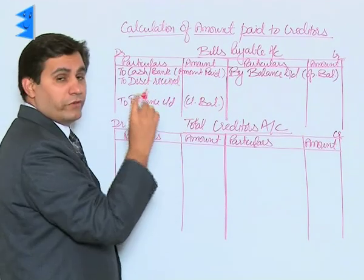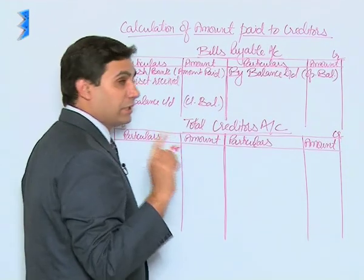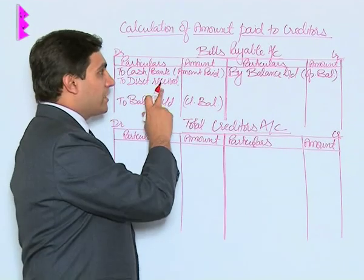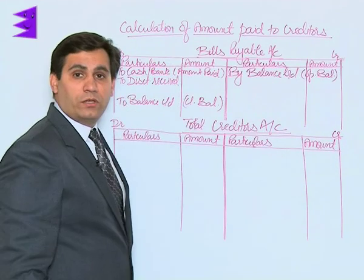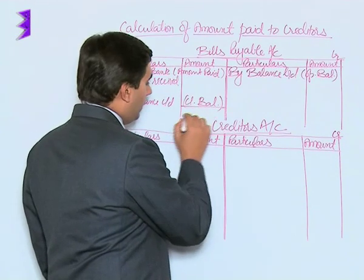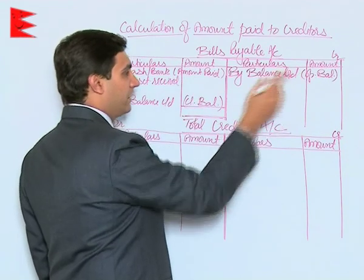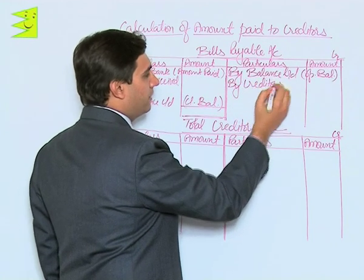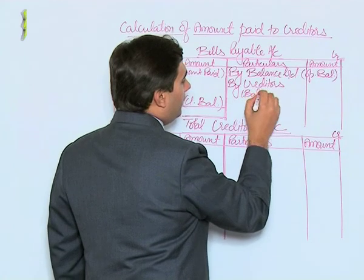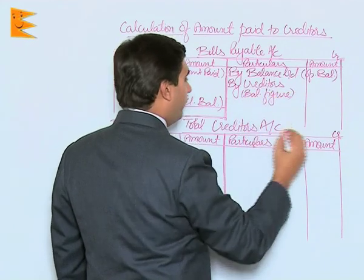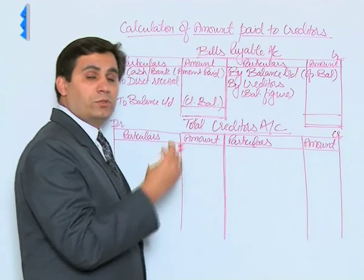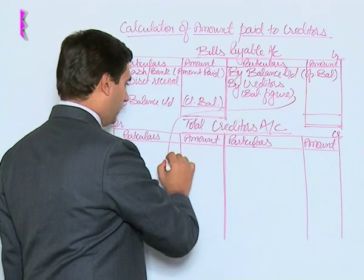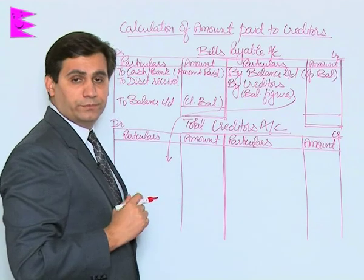On account of any payment made for bills payable, remember the journal entry would be: bills payable to cash. Since the payment has been made with a discount, it would be bills payable to cash and to discount received. The total of the debit side is subtracted from the credit side and we get the balancing figure, written as 'by creditors,' which represents the amount of bills payable issued by us to the creditors during the year.